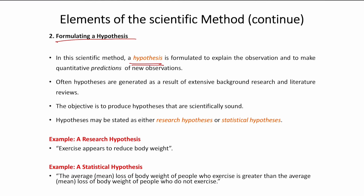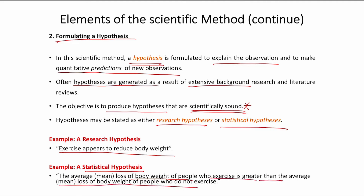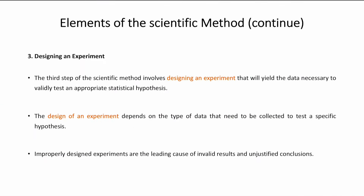Formulating a hypothesis involves explaining the observation and making quantitative predictions of new observations. Hypotheses are generated as a result of extensive background research and literature reviews, and must be scientifically sound. Hypotheses are stated as either a research hypothesis — for example, 'exercise appears to reduce body weight' — or a statistical hypothesis, which uses statistical data to represent the same information, such as 'the average loss of body weight of people who exercise is greater than that of people who do not exercise.'